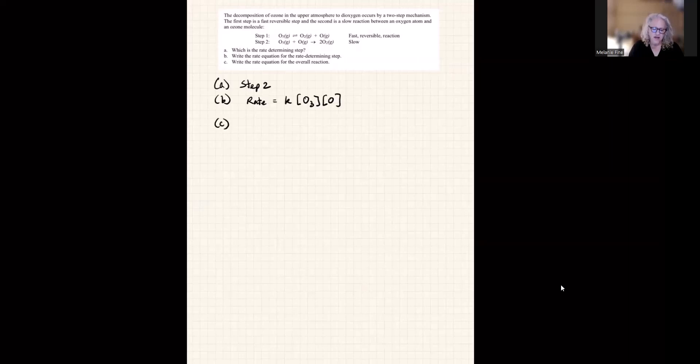And then finally, it asks us the rate equation for the overall reaction. Now, normally, that would be the rate of the slow step. However, since the rate of the slow step has an intermediate, we cannot have this as the overall reaction because it doesn't show up in the actual stoichiometry of the reaction. So we need to substitute out for the concentration of oxygen atom something else that represents that.